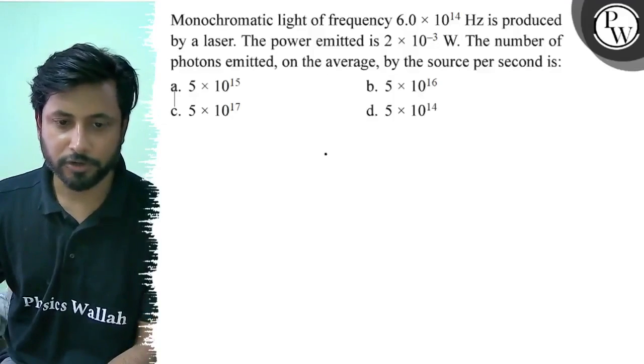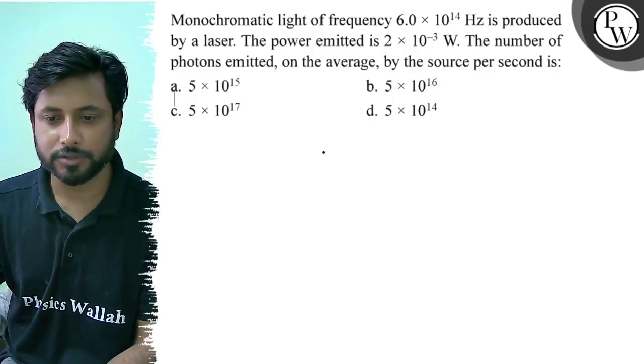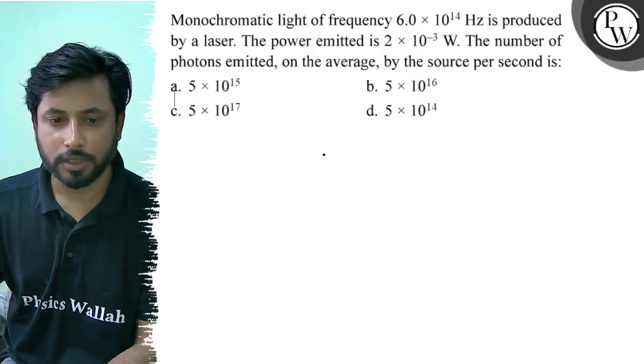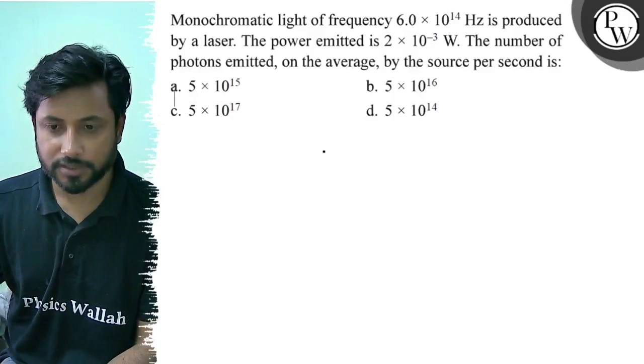Hello, let us see this question. Monochromatic light of frequency 6 × 10^14 Hz is produced by a laser. The power emitted is 2 × 10^-3 watts.